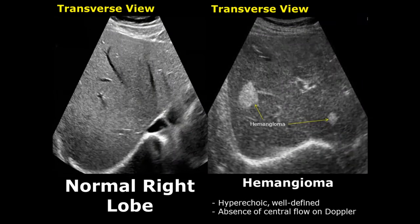Hemangiomas are benign liver masses. They are mostly hyperechoic, well defined, and they can be more than one. They will not have any posterior shadowing. Here you can see one mass here and another mass over here.